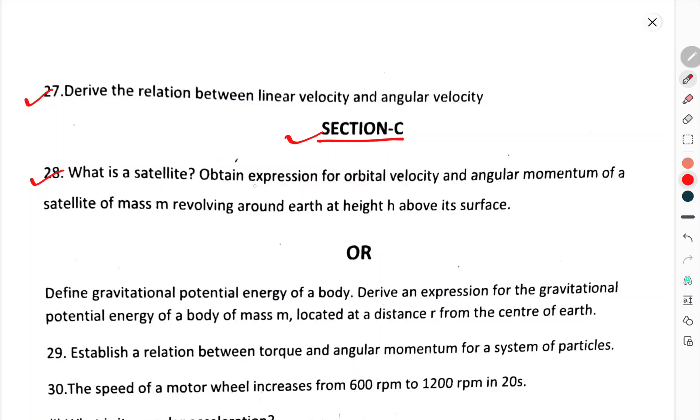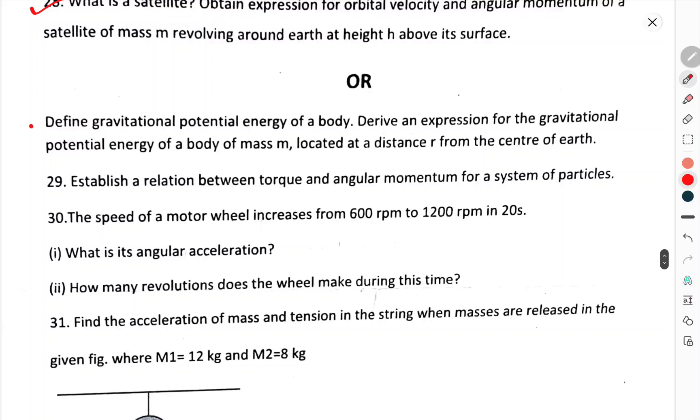Question number 28. What is a satellite? Derive an expression for the orbital velocity and angular momentum of a satellite of mass m revolving around the earth at height h above its surface. Or define the gravitational potential energy of a body. Derive an expression for the gravitational potential energy of a body of mass m located at a distance r from the center of the earth. Establish a relation between the torque and angular momentum of a system of particles.